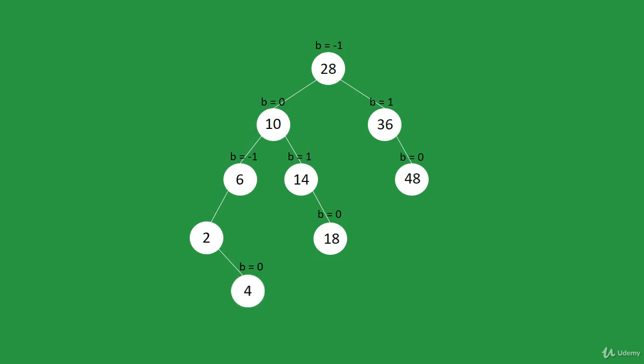Let's compute other balance factors. Balance of 2 will be 1, balance of 6 will be minus 2, and we stop right here. Since 2 has positive balance and 6 negative, we do left-right rotation, and after this rotation the balance factors of these will become 0.